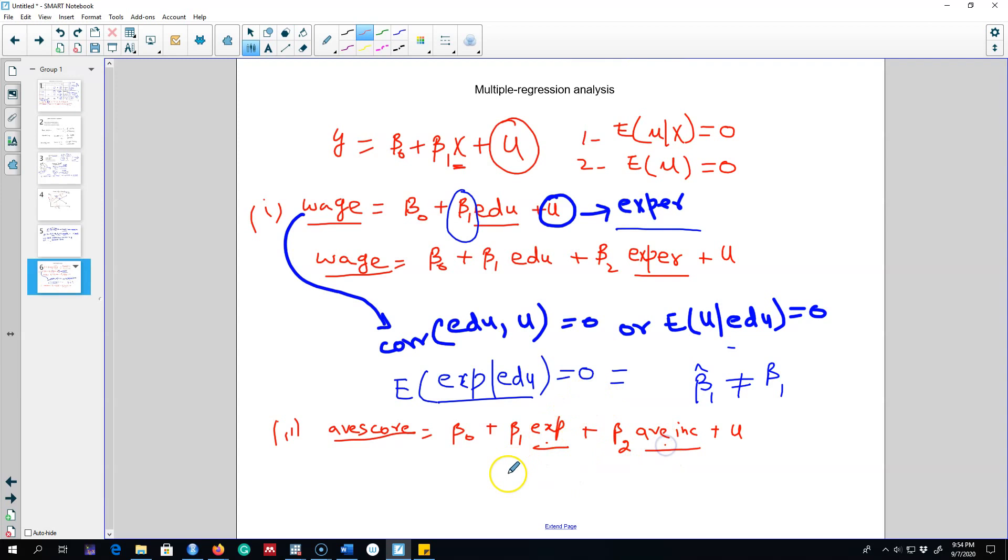But there's a correlation between expenditures and average income - higher the income, the more will be family expenditures. So these two variables are correlated with each other, and if we omit this variable from the model, this u will capture the effect of this and then there will be a correlation between expenditures and u. That's why, why not include this variable in the model?